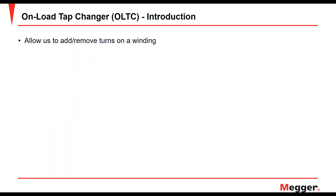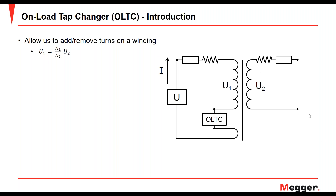The on-load tap changer, or OLTC, allows us to add or remove turns on our transformer winding during operation. This allows us to modify the voltage on the transformer secondary side. We have the primary and secondary side, the impedances of both windings, a voltage source injecting current, and then the OLTC - or the regulatory winding - which represents the OLTC. The OLTC can be on either side, depending on which solution you have.